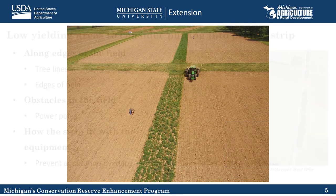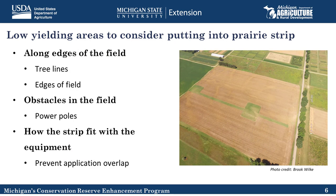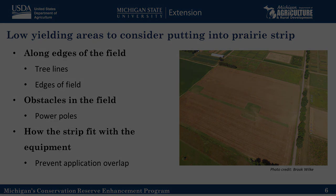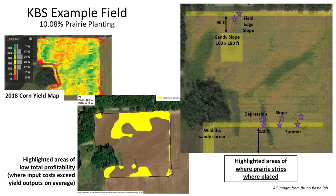When we think about where to put these prairie strips in our fields, we consider those factors as well as the history of our fields — particularly focusing on what parts of the fields have historically yielded well and been profitable, and what parts haven't yielded so well. One area we typically find to be lower yielding is along the edges of our fields, where we turn around a lot, or along tree lines where trees compete for resources.